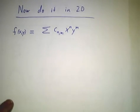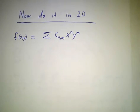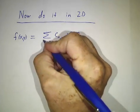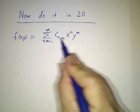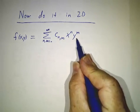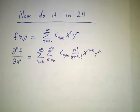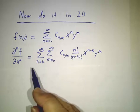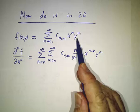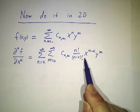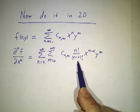We play the same game in functions of two variables. Here we have our sum as n and m goes from zero to infinity, some coefficient x to the n, y to the m. Now if we take a derivative with respect to x k times, the y's are just coming along for the ride and the x's do exactly what they did before. All the terms with fewer than k x's die.